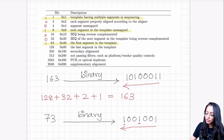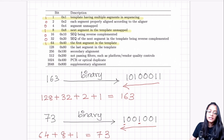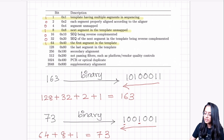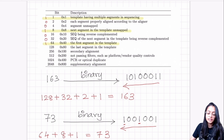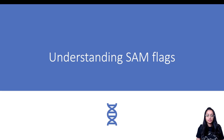Highlighting all rows corresponding to 1: the SAM flag 73 corresponds to flags 64, 8, and 1, which add up to 73. Flag 1 tells us the template has multiple segments — paired read; flag 8 tells us the next segment in the template is unmapped — the mate of this read is unmapped; and flag 64 tells us this is the first segment in the template — the first read in the pair.